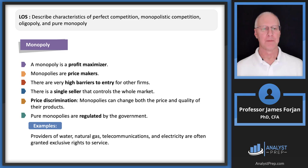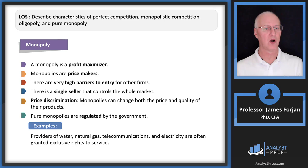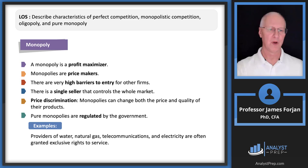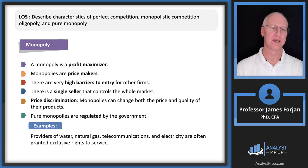A monopoly is a profit maximizer. Depending on its cost structure, it sets quantity and price so that profit is maximized. Monopolists are price makers — they get to pick the price in the marketplace. Characteristics include very high barriers to entry, a single seller, and price discrimination. Because the monopolist is taking advantage of consumers, it tends to attract government attention, so pure monopolies tend to be regulated in open market societies.